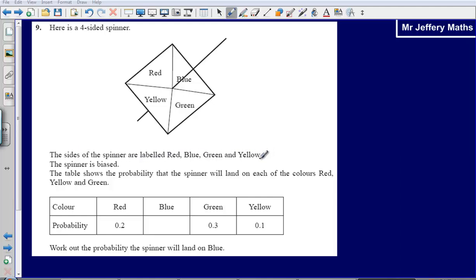The sides of the spinner are labelled red, blue, green and yellow. The spinner is biased. The table shows the probability that the spinner will land on each of the colours red, yellow and green.